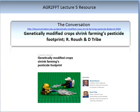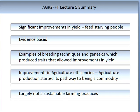To summarise the components covered in this lecture: the Green Revolution made significant improvements in yield — it really did stop people starving. These improvements were stepwise, had never been witnessed before, and it is unlikely we will see such massive improvements in the future. They were evidence-based, grounded in science and research, and outcomes of research working closely with industry. They are examples of breeding techniques and genetics which produced traits allowing improvements in yield, along with other technologies such as nutrient efficiency increases, pest and disease management increases, and better understanding of water — all collectively leading to improvements in agricultural efficiency.